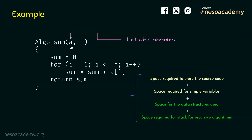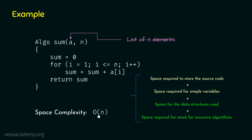Data structure A is the only data structure used in this algorithm. Let us assume that each element of this list takes one unit of memory space. Then, as it contains n elements, the amount of space it takes will be n units. Therefore, the space complexity of this algorithm is O(n), because n elements of this data structure will take n units of memory space.